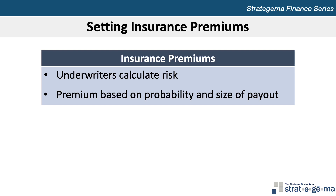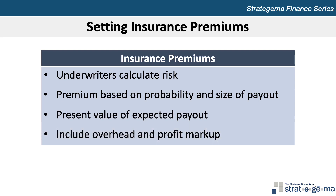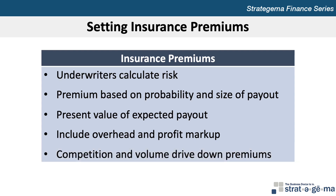When insured parties are more likely to experience an event that will require the insurance company to provide a payment, the payments will be relatively high. The premium charged is also influenced by the present value of the expected payment for the claim. In addition, the premium will contain a markup to cover overhead expenses and provide a profit beyond expenses. Premiums may also be influenced by the degree of competition within the industry for the specific type of insurance offered. When many competitors offer the same type of insurance, the premium is likely to be lower. Insurance companies tend to charge lower premiums when they provide services to all employees of a corporation through group plans.